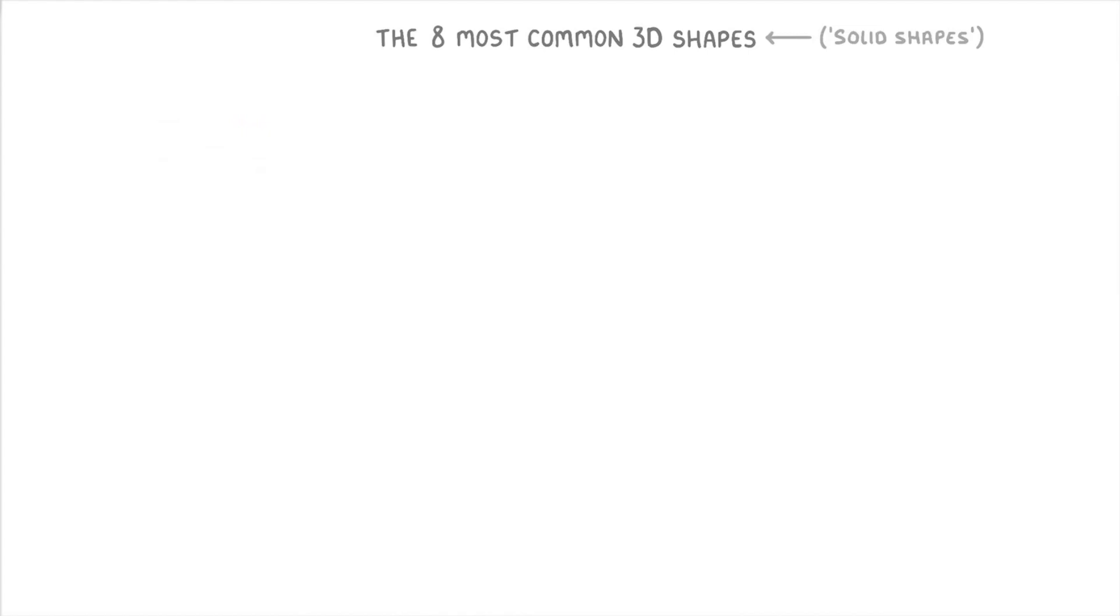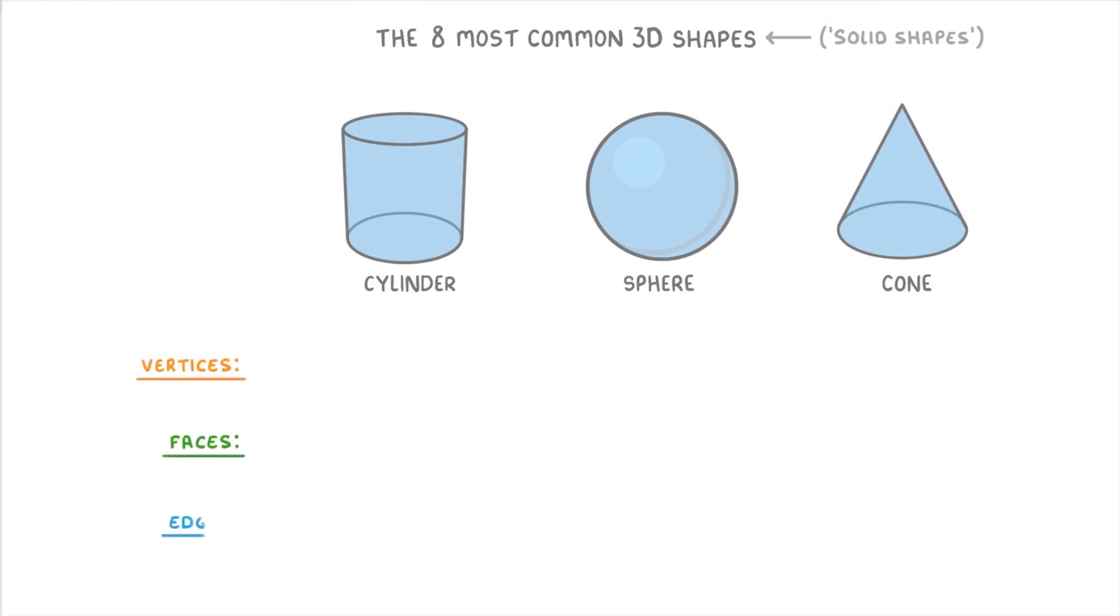Before we finish, I just want to go through cylinders, spheres, and cones in a bit more detail. Specifically, how many vertices, faces, and edges they each have.